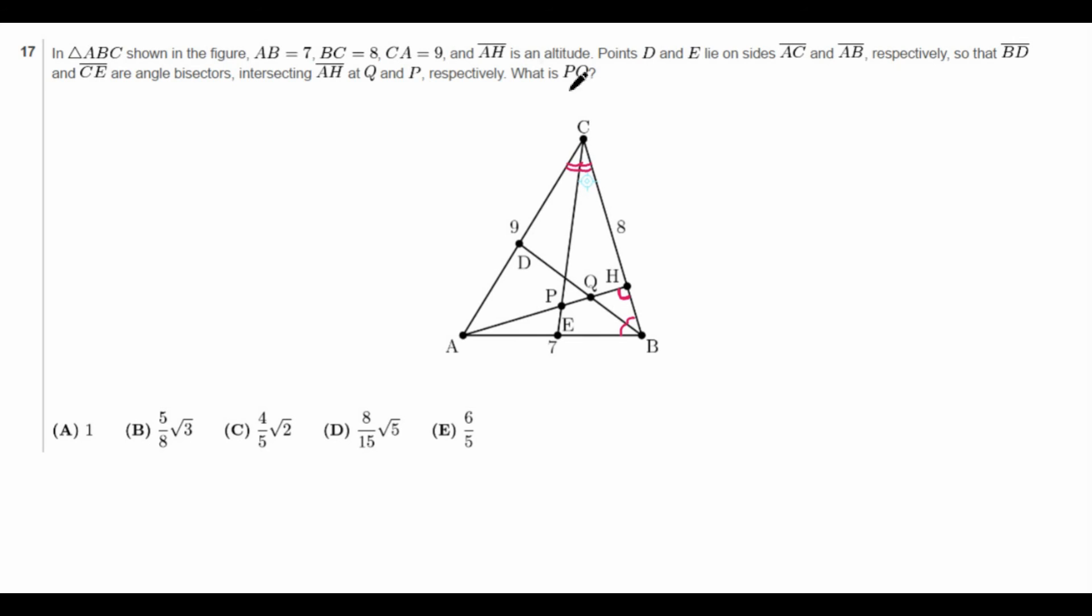In order to find PQ, we ideally want to find the ratio of AP to PQ to QH. Because then if we know the entire length of AH, we can use these ratios to find the length of PQ. So first off, before I even start finding the ratios, we have to find the length of AH.